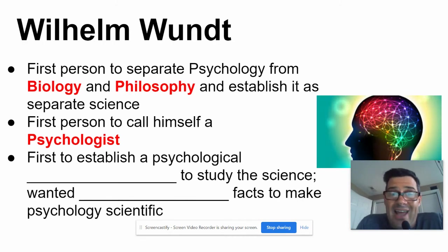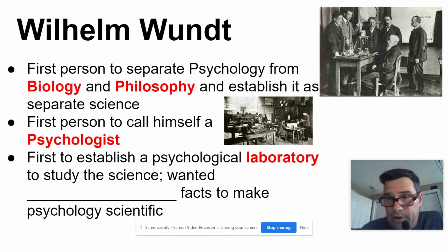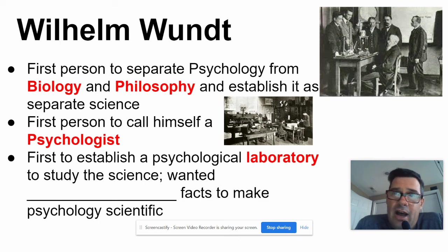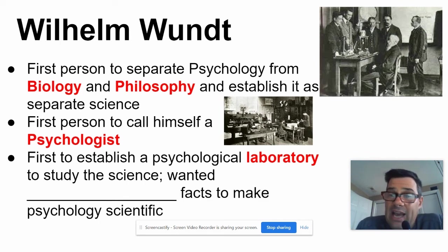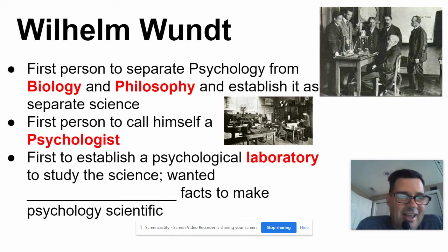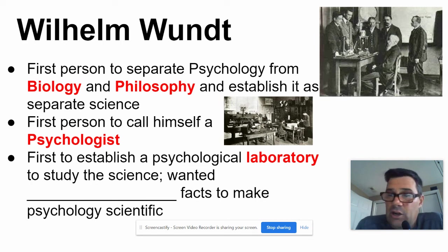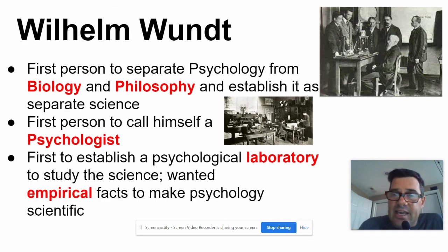He becomes the first person to actually call himself a psychologist. He also is the first to establish a psychological laboratory. You can see a couple of photographs — that's Wilhelm Wundt with the big beard sitting in the chair in his laboratory. You can see they have different things around the room for the psychological experiments he thought were important. He wanted to establish psychology as a science, so you have to have a lab to do experiments. He wanted what we call empirical facts to make psychology scientific.